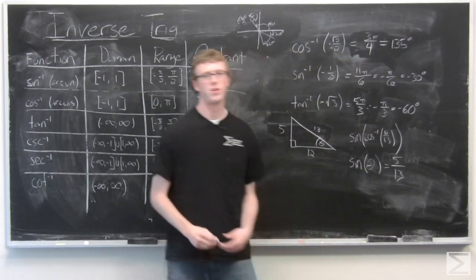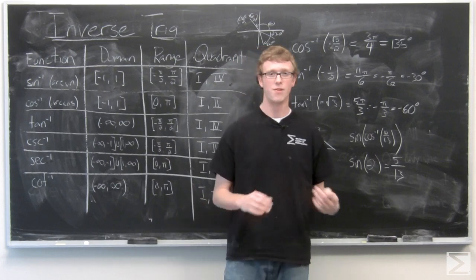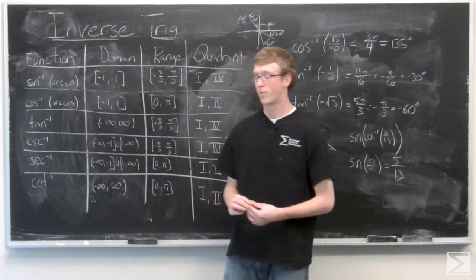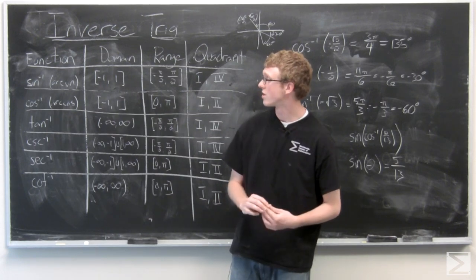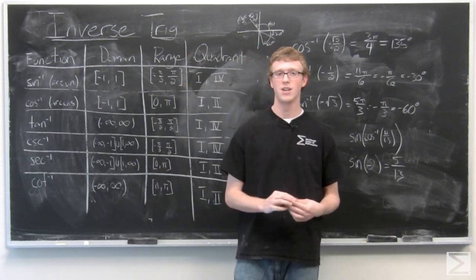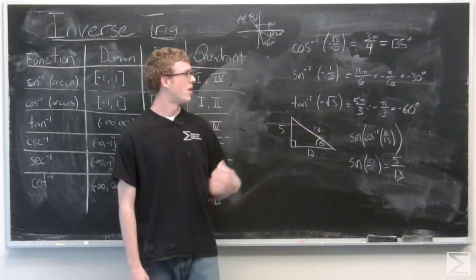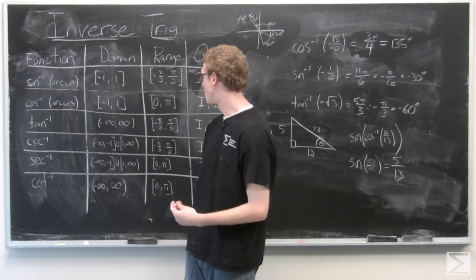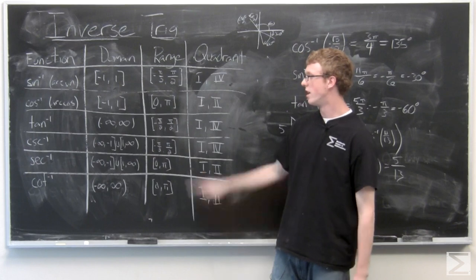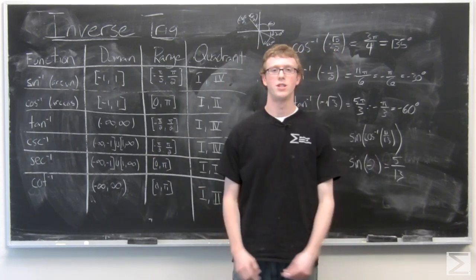So again, you want to be really careful when you're working with inverse trig, because the domains and ranges are flipped between the restricted normal trigonometry functions. But they can be really useful in finding angles. So just remember this point that you need to subtract 2π or 360 degrees from angles that you find in the fourth quadrant in order to get them in the proper range. And that's pretty much all you need to know about inverse trig.